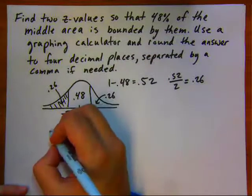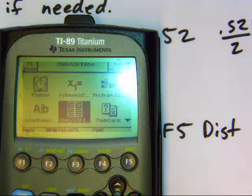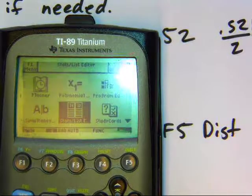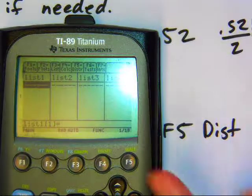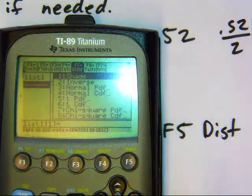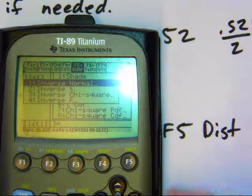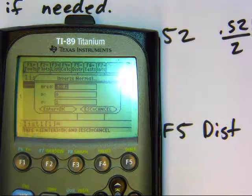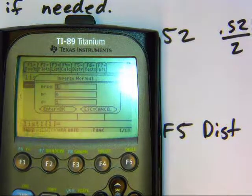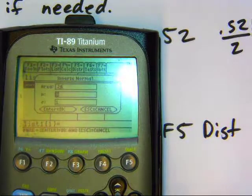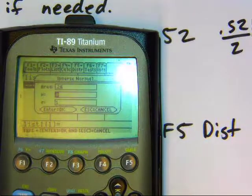Then you're going to go to your stat list editor app. Here's the stat list editor. Hit enter, going up to F5 for distributions, inverse, normal, area, 0.26, 0 and 1 for the mean and standard deviation.